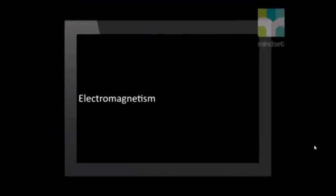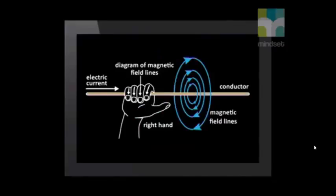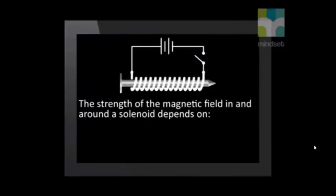We started by learning that electromagnetism is the study of the properties and relationship between electric current and magnetism. Then we investigated that a current carrying conductor produces a magnetic field around the conductor. The direction of this magnetic field is found by using the right-hand rule. This magnetic field is the principle on which electromagnets work.